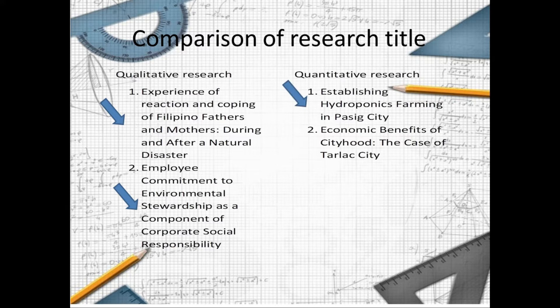For quantitative research, an example title is 'Establishing Hydroponics Farming in FASIG.' Through this title, we cannot gather data using descriptions from respondents — it involves numbers. Another example is 'Economic Benefits of Cityhood,' which also involves numbers, and results can be achieved through the use of numerical data.